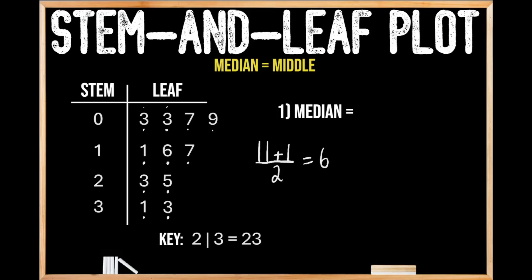So let's count these out. We have 1, 2, 3, 4, 5, and 6. So we have a leaf of 6 and we have a stem of 1. And remembering our answer key from earlier, a stem of 1 and a leaf of 6 is going to have a value of 16. So that means that the median value of this stem-and-leaf plot is going to be 16.